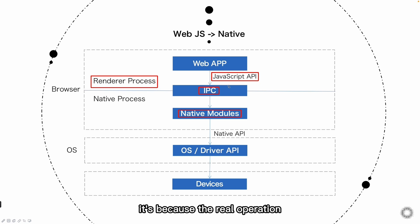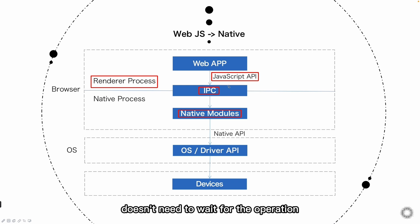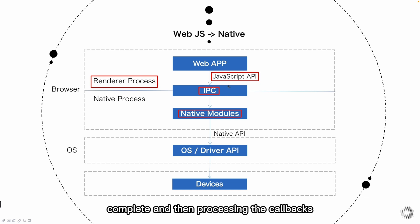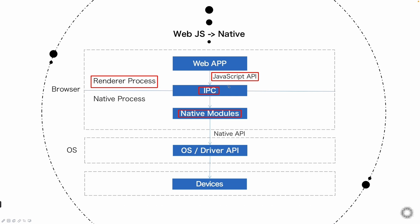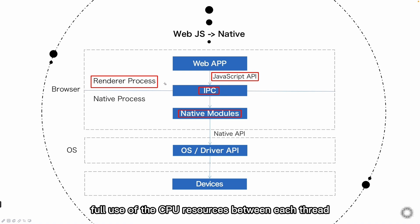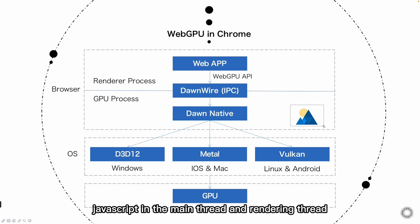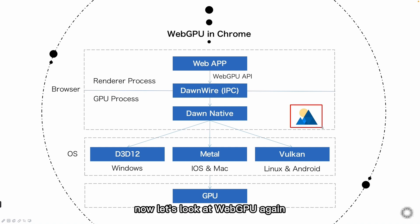This is actually one of the biggest features of web or JavaScript technology. It's because the real operation is actually performed in the native process, and the JavaScript process doesn't need to wait for the operation synchronously. JavaScript can be free to do some other things first, and then wait for the native process to complete, and then process the callbacks. The browser kernel has done a lot of optimization for this asynchronous operation, so we can make full use of the CPU resources between each thread, especially CPU efficiency of JavaScript in the main thread and rendering threads.